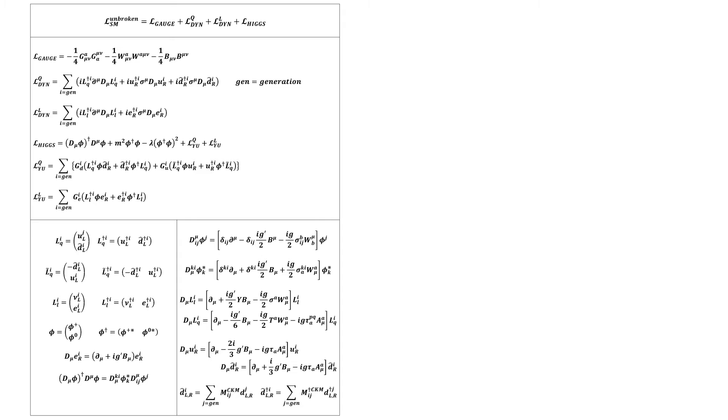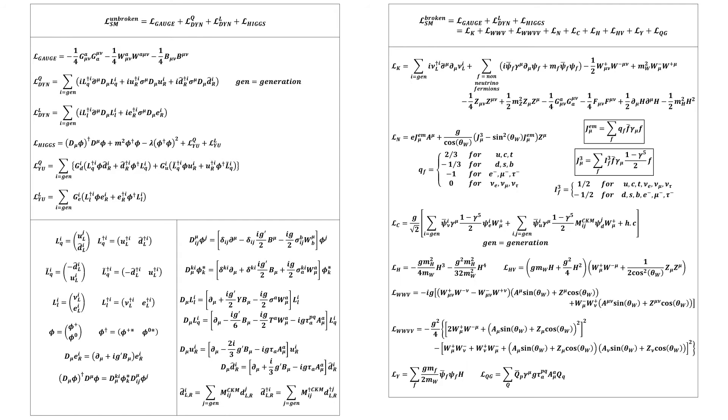In a previous particle physics video, I showed how to construct the complete Standard Model Lagrangian with massless neutrinos. Specifically, we arrived at this unbroken Lagrangian density and this spontaneously broken one.